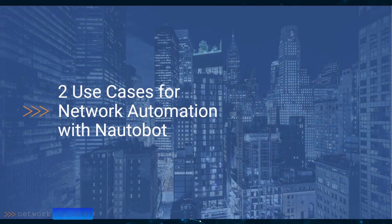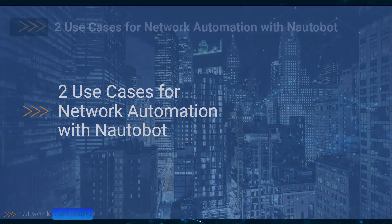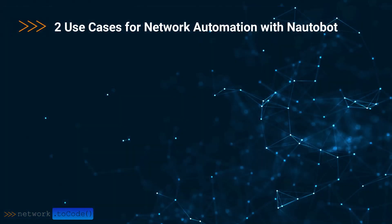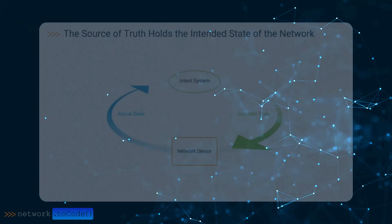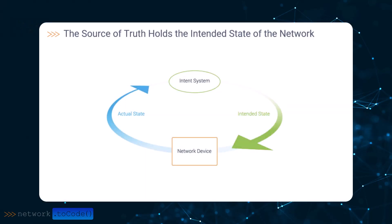Now that you've seen who can use Nautobot for network automation, let's consider how to use it. There are two main use cases. The first is that it contains a source of truth database. Let me tell you something that many don't realize — your actual network configuration is not the source of truth.